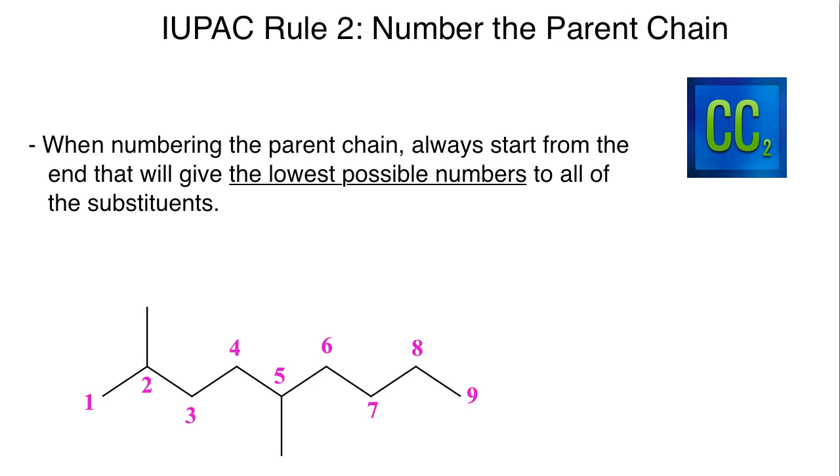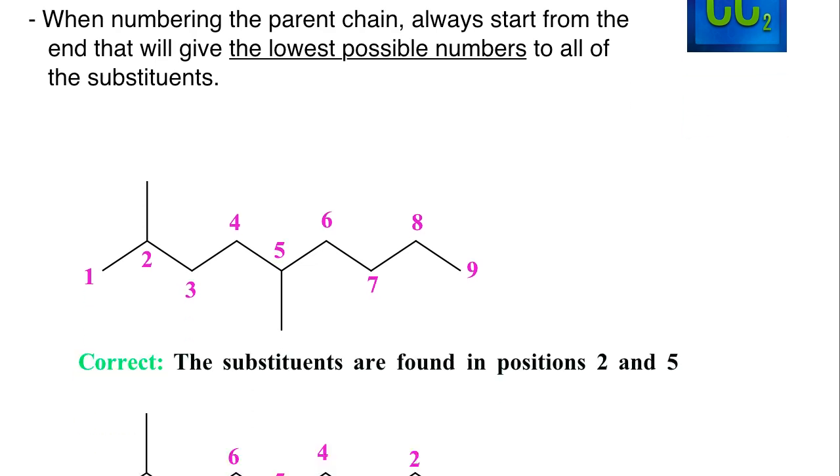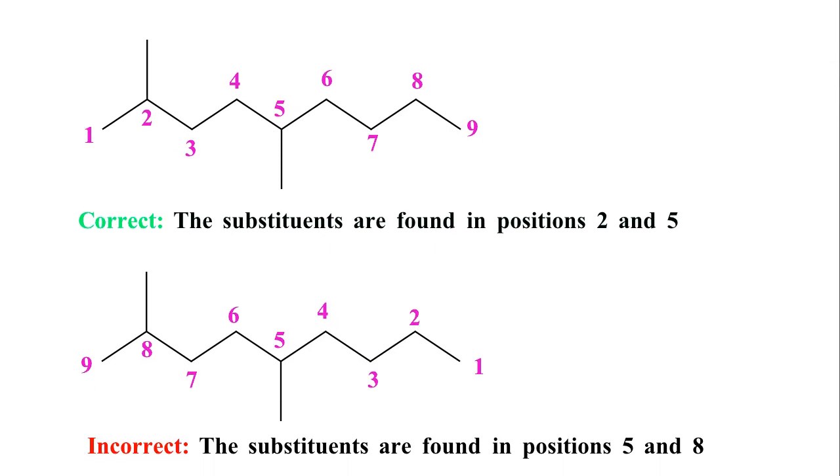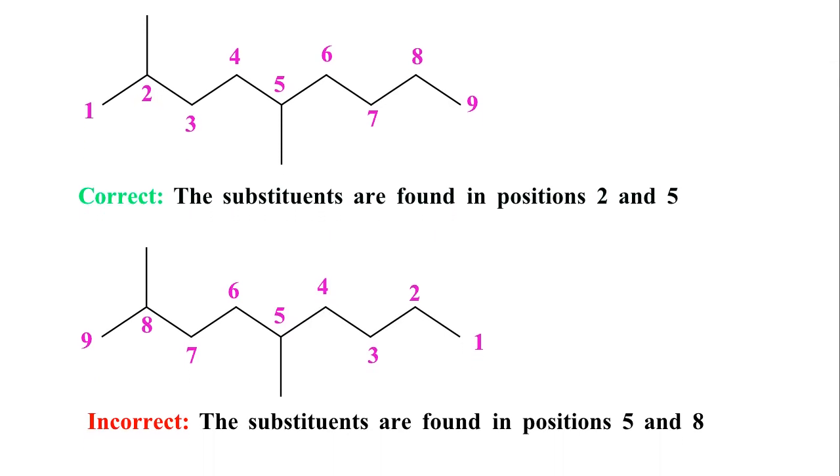So you can take a look at the example that we've set forward here. Take a look at these first two here. We have an example with a nonane. So there's a total of nine carbons in the main parent chain and you can see that there are two methyl substituents that are coming off of this main nonane parent chain.